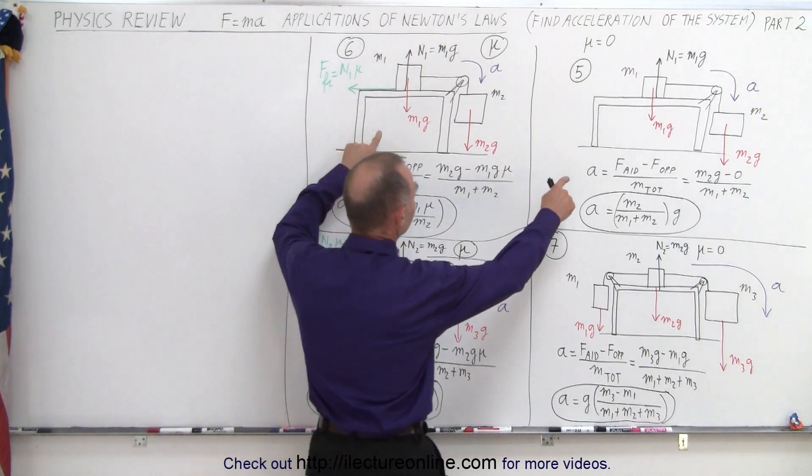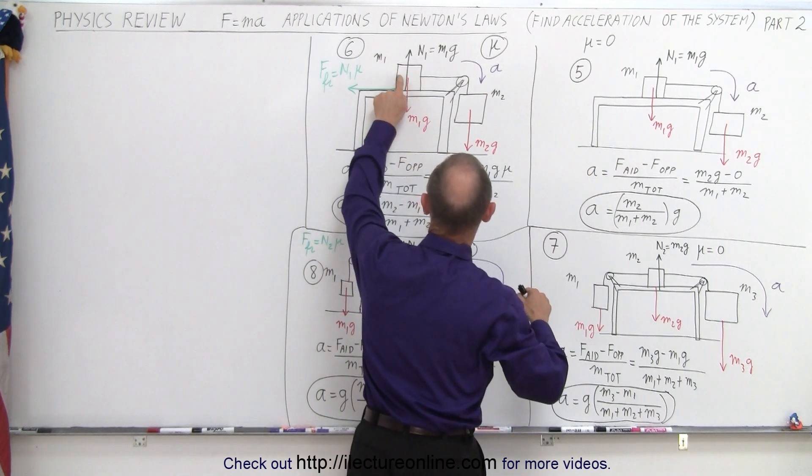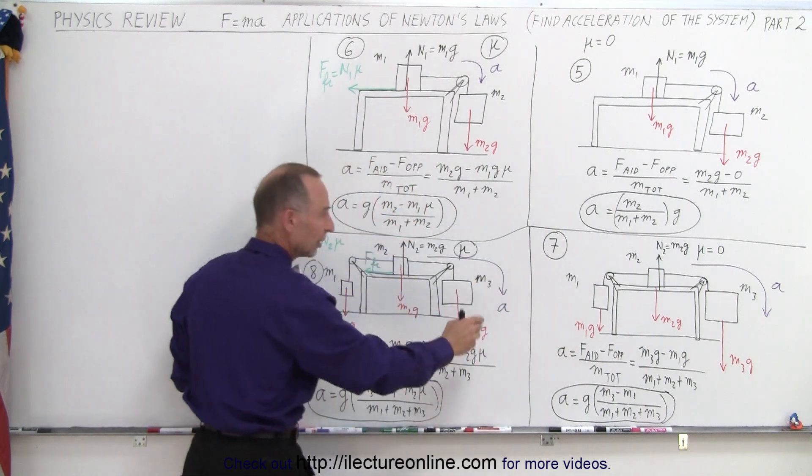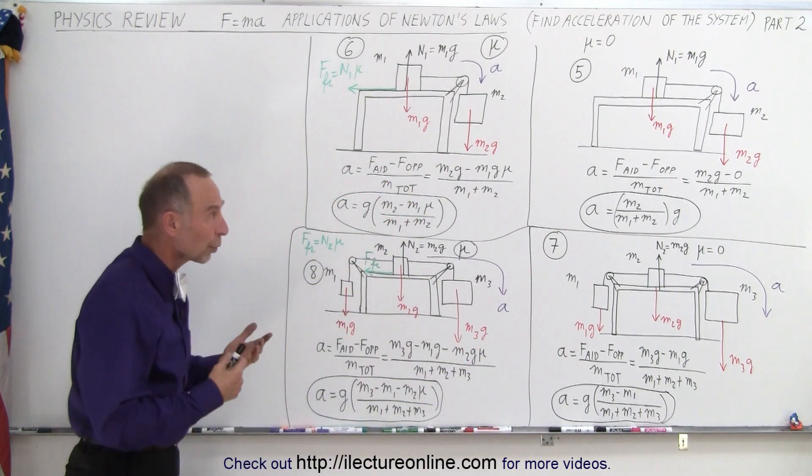Notice that the first two examples are identical, except for this one has no friction, where this one has friction between this object and the table. Here, these two are identical. That one has no friction. This one has friction. So how do we work this?